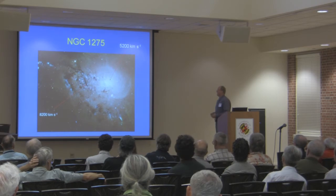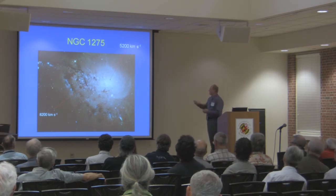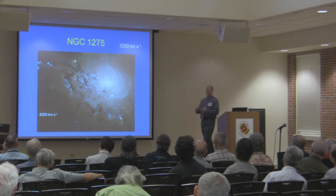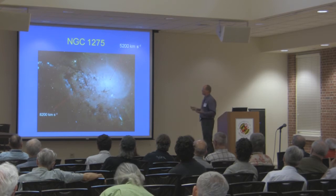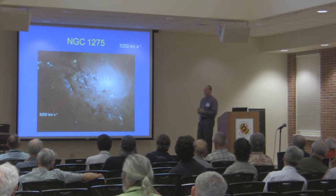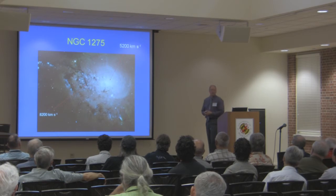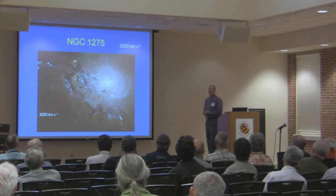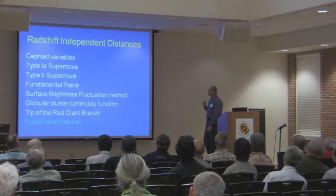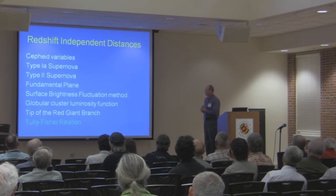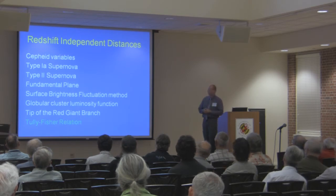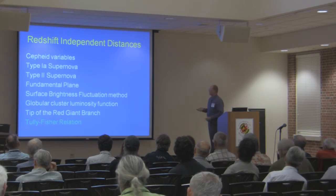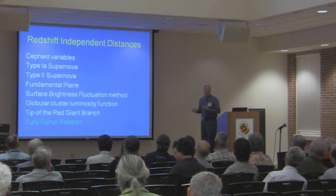Here's a great example: NGC 1275. The central elliptical galaxy has a redshift of 5,200 kilometers per second, and there is clearly a galaxy superposed in front of it — an 8,200 kilometers per second broken-up galaxy. There's no question the foreground galaxy has a 3,000 kilometers per second higher redshift. Having redshift-independent distances would make a big difference. Some of these other techniques are very relevant to exploring this. My own research deals with the Tully-Fisher relation, and I got into it because a lot of Arp's work was about spiral galaxies.